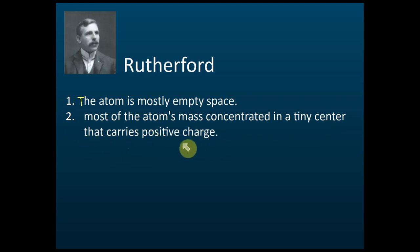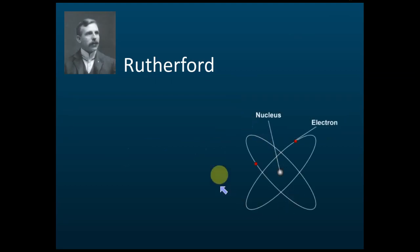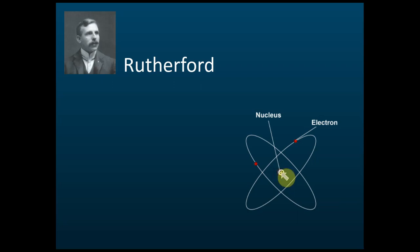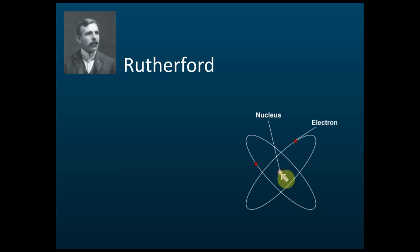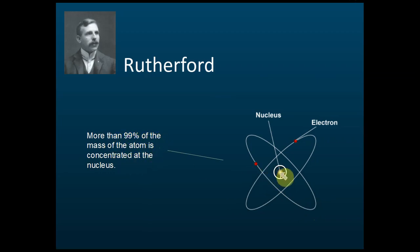Rutherford's model looks like this: the atom has a lot of empty space — 99.9% empty — but in the center of the atom there is something called the nucleus, and most of the mass, 99.9%, is concentrated at this nucleus. Electrons are just moving around the nucleus. Because Rutherford discovered protons, he says the proton is inside the nucleus, so more than 99% of the mass of the atom is concentrated at the nucleus.